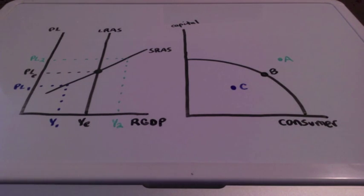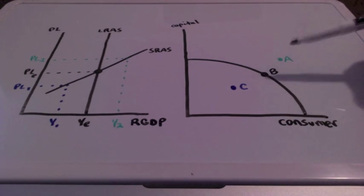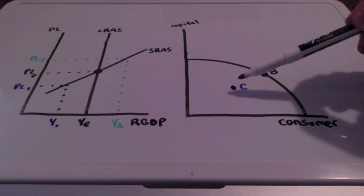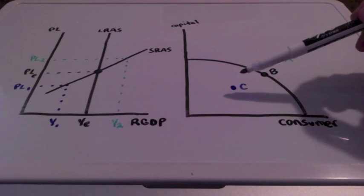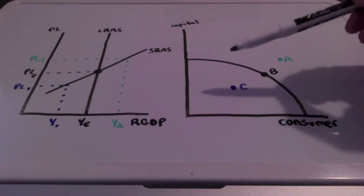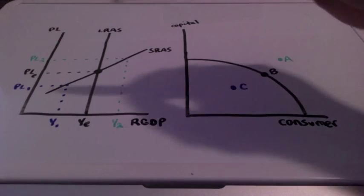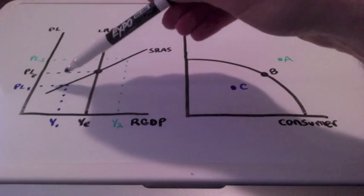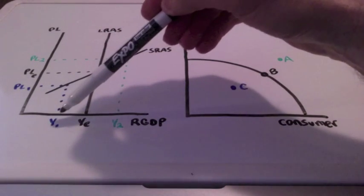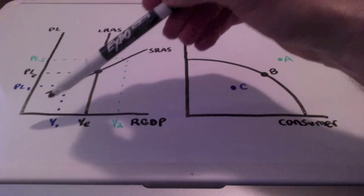If resources are unemployed, we would be inside the production possibilities curve, which would represent letter C, also corresponding to price level 1 and GDP 1.